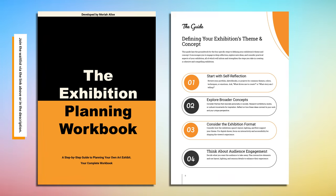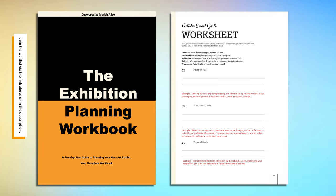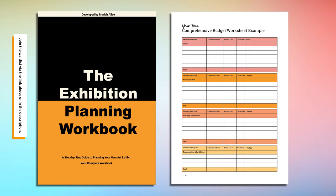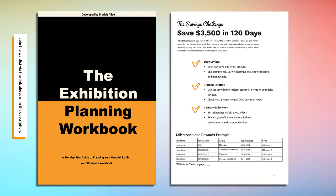If you're watching this before October 2nd, join the wait list for my exhibition planning workbook, which launches on October 2nd, and you'll receive a $10 discount to help you get started. Keep in mind, this is a PDF version — an ebook you can download as soon as you pay for it. We will be dropping the physical version of the book soon.